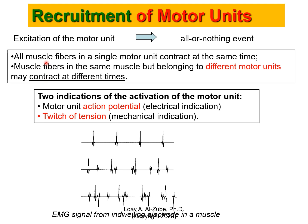If I'm doing flexion and extension the first time, I'm using one set of motor units; if I do it again, I'm using a different set — the brain selects this based on energy consumption to optimize the process. We have two indications of motor unit activation: the motor unit action potential (electrical indication) or the twitch of tension (mechanical indication). Your EMG is a collection — a summation — of a lot of motor unit activities together. You can't actually single out one motor unit — it's very difficult, we don't have the technology yet.